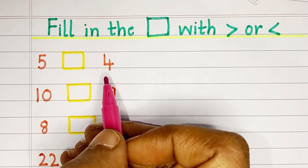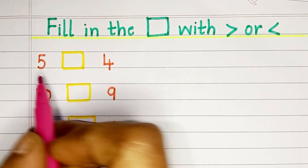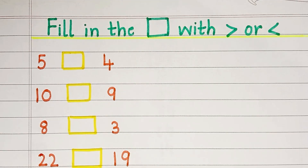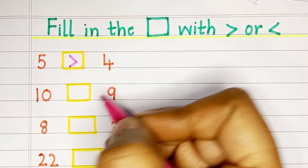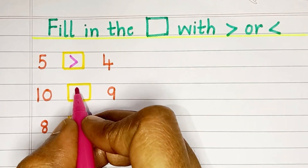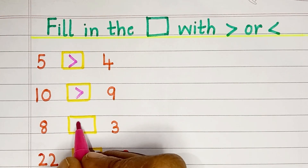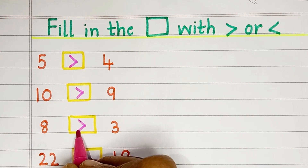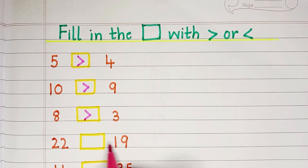Here, 5 is greater than 4. Here, 10 is greater than 9. 8 is greater than 3. 22 is greater than 19.